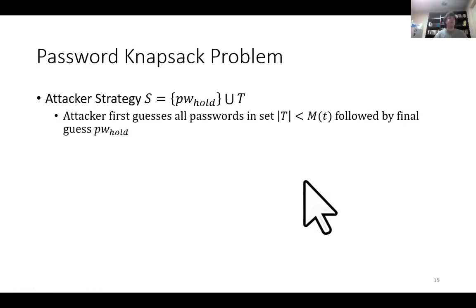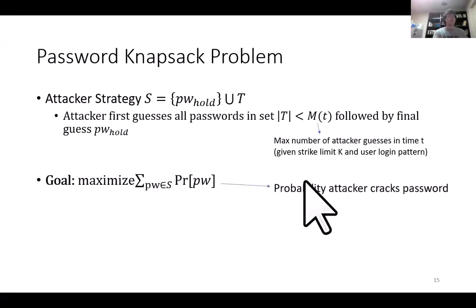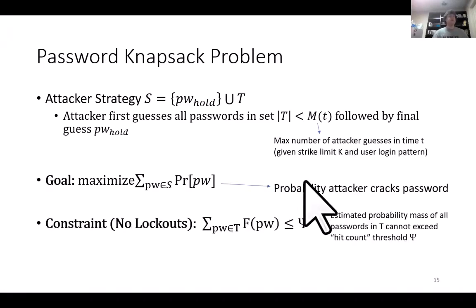The password knapsack problem is as follows. We model the attacker's strategy by specifying a set T and a holdout password PW_HOLD. The basic strategy is that the attacker first guesses all the passwords in set T, followed by the final holdout password guess. We require that |T| is less than some parameter M_T, where M_T denotes the maximum number of guesses the attacker can make by time T, given the strike limit K and the user's actual login pattern. The attacker's goal is to maximize the probability that it cracks the password — in other words, maximize the probability that the user's password lies in set T — subject to the constraint that the sum of estimated frequencies for all passwords in T, excluding the holdout password, cannot exceed the hit count threshold psi.